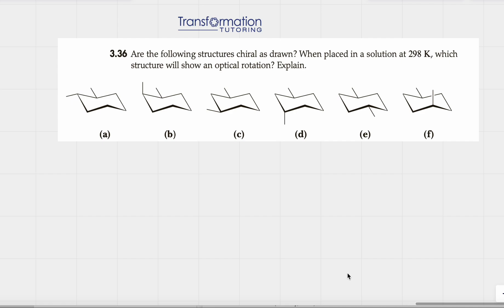Are the following structures chiral as shown? When placed in a solution at 298 Kelvin, which structure will show an optical rotation? Explain.